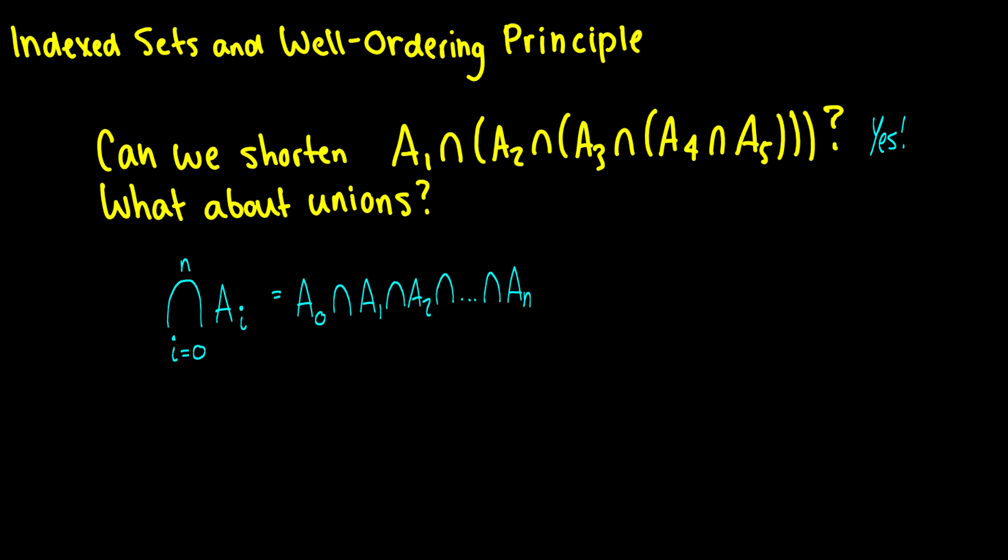And similarly with unions, we do the same thing. The exact same notation, except instead of intersections, we have unions, and this will also go up to A sub N. You can start this index at whatever number you want, and you can end it at whatever number you want.